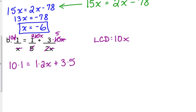For our first term, the x's cancel, so we're left with 10 times 1 equals, for the second one, 10 over 5 reduces to 2, so we have 1 times 2x. For the last term, 10 over 2 reduces to 5, and the x's cancel, so we're left with 3 times 5. We've got 10 equals 2x plus 15, and it's just a linear equation.